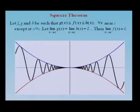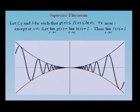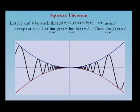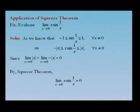Now we have a special theorem known as the Squeeze Theorem. It states: let f, g, and h be functions such that g(x) ≤ f(x) ≤ h(x) for all x near c except at x = c. Further, if limit x→c of g(x) = limit x→c of h(x) = l, then limit x→c of f(x) = l. This means that when f is lying between g and h, and both g and h are approaching l, then f will also approach l.